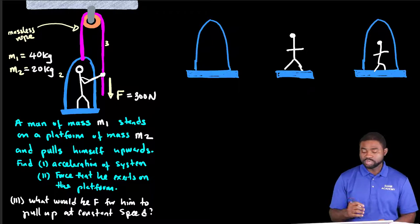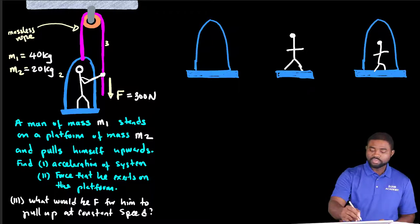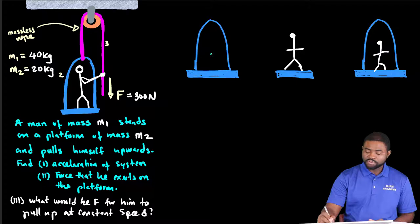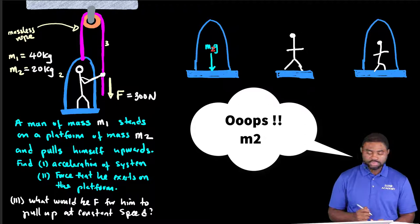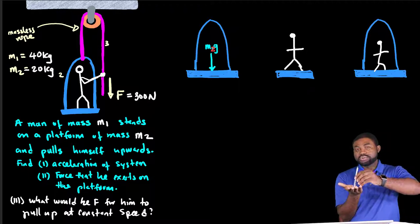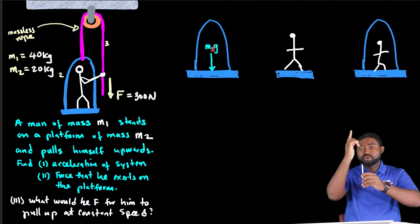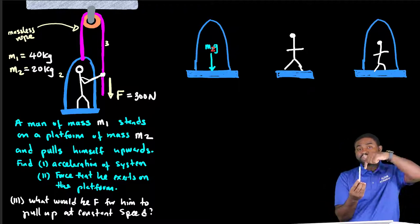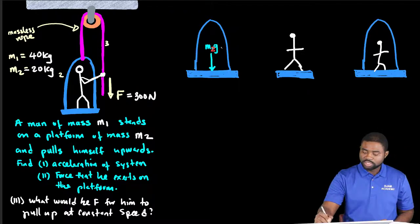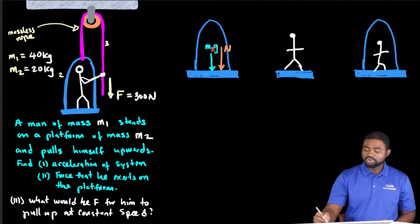The platform is M2 and the man is M1. The platform obviously has weight, so there is a force of gravity that the earth asserts on the platform — this is M2G. There is also the normal force. The guy is standing on the platform, so the platform asserts a normal force on him upwards. By Newton's third law, he also asserts a normal force on the platform downwards. This is the normal force that the man asserts on the platform.